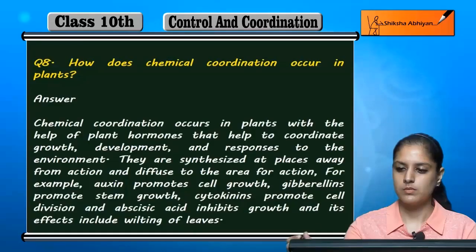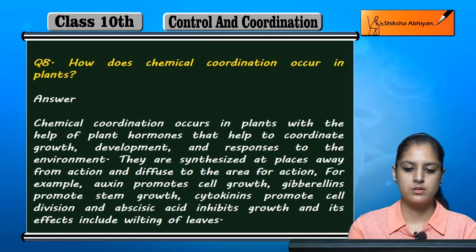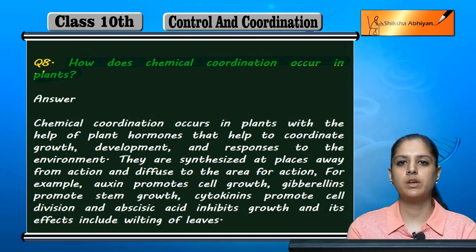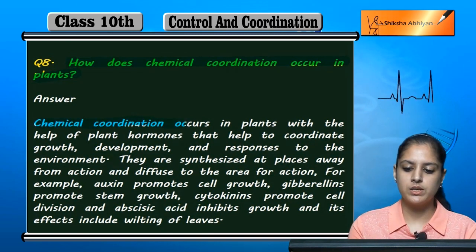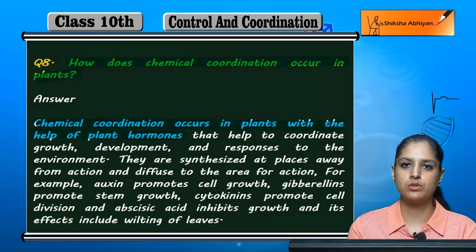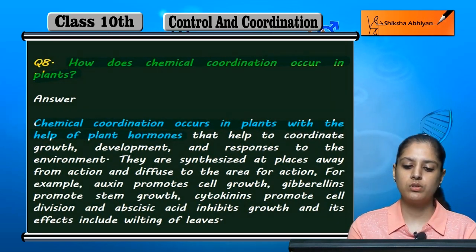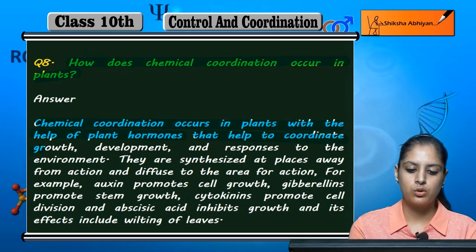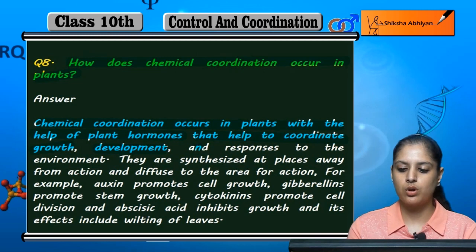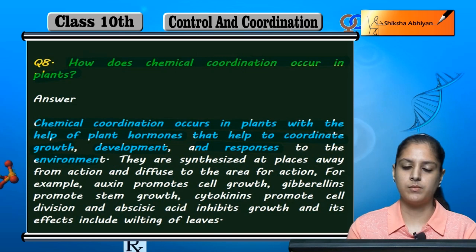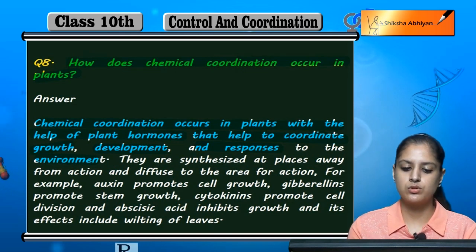Question 8: How does chemical coordination occur in plants? Chemical coordination occurs in plants with the help of plant hormones. These plant hormones coordinate growth, development, and responses to the environment.